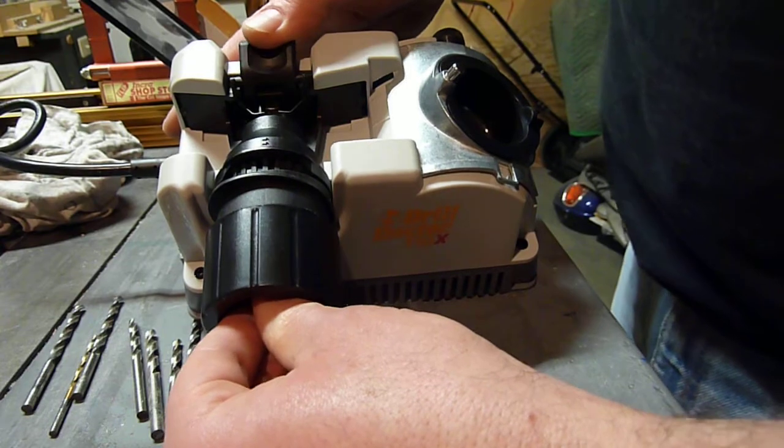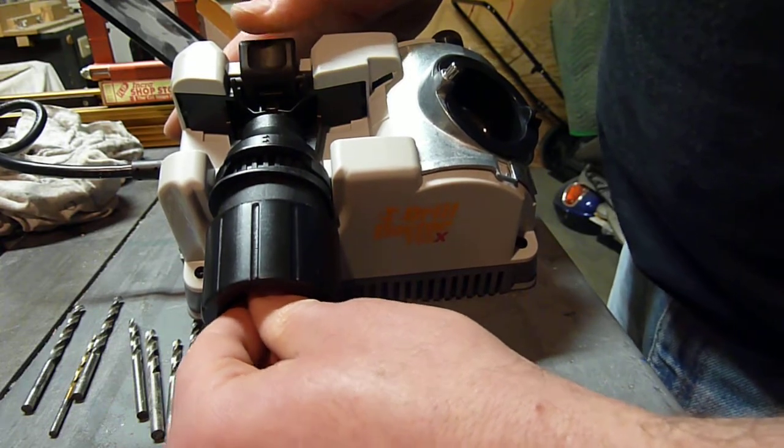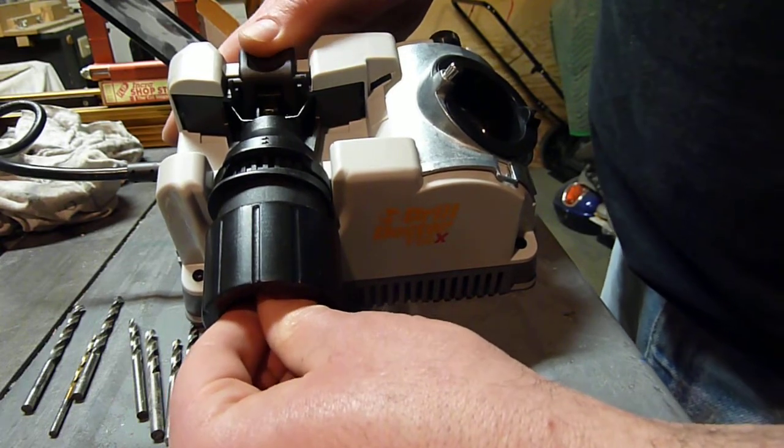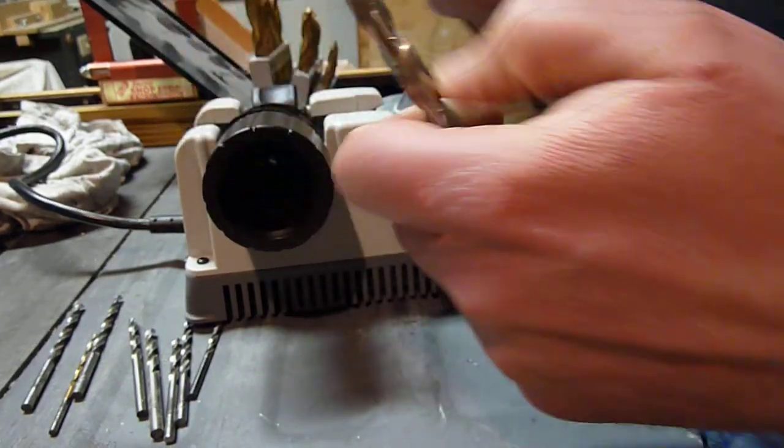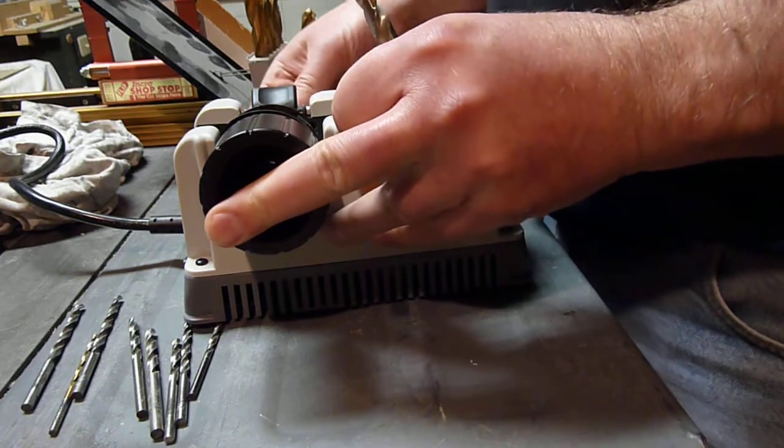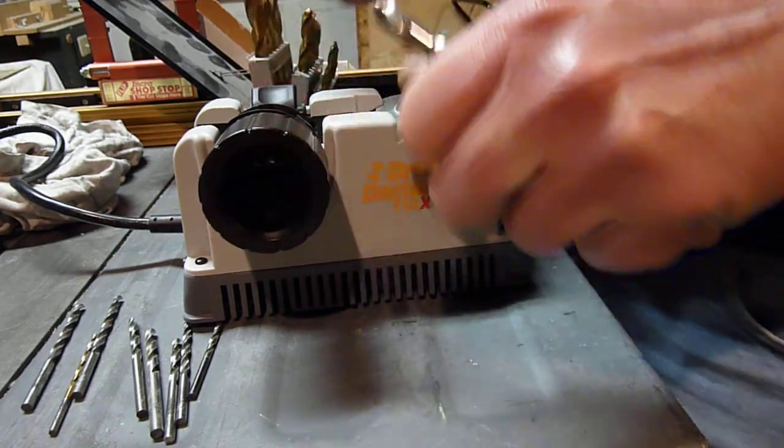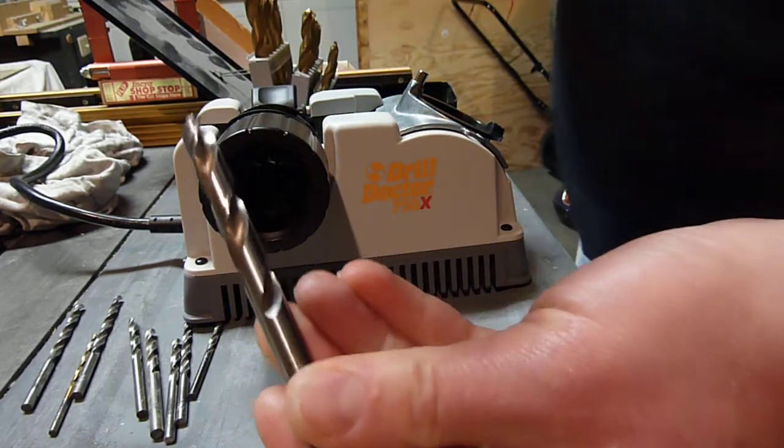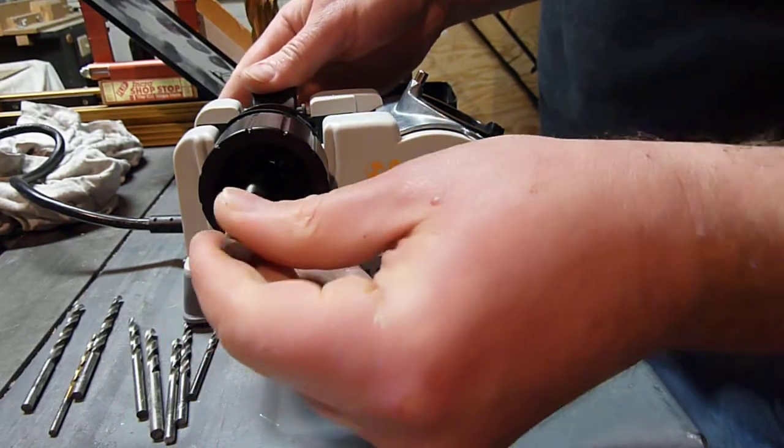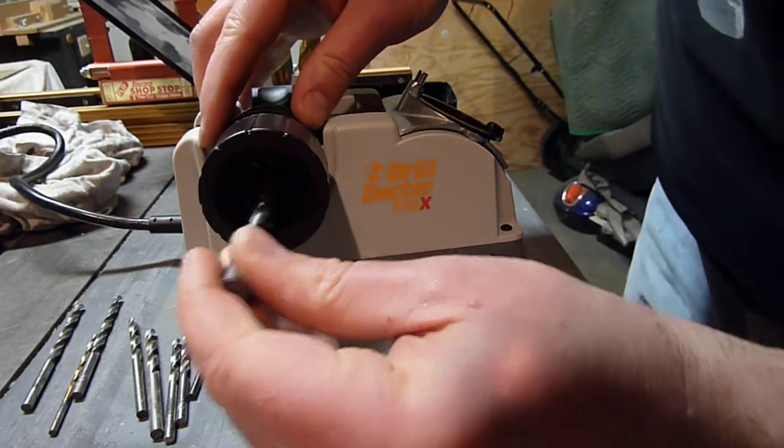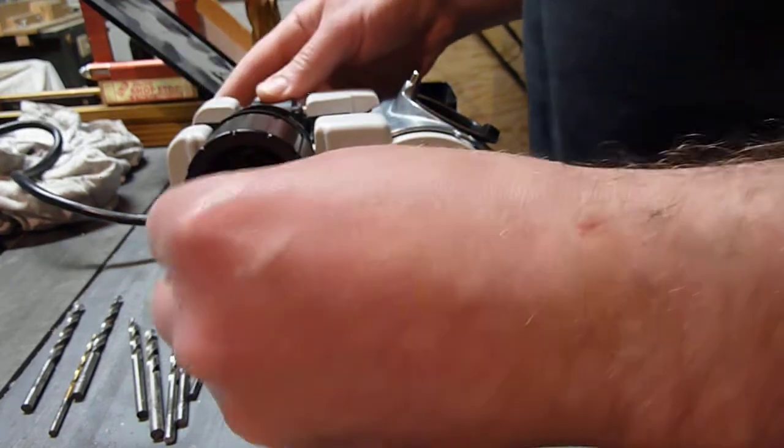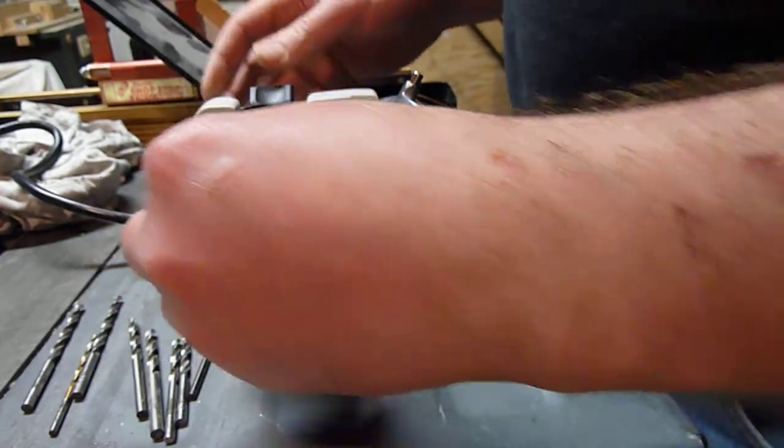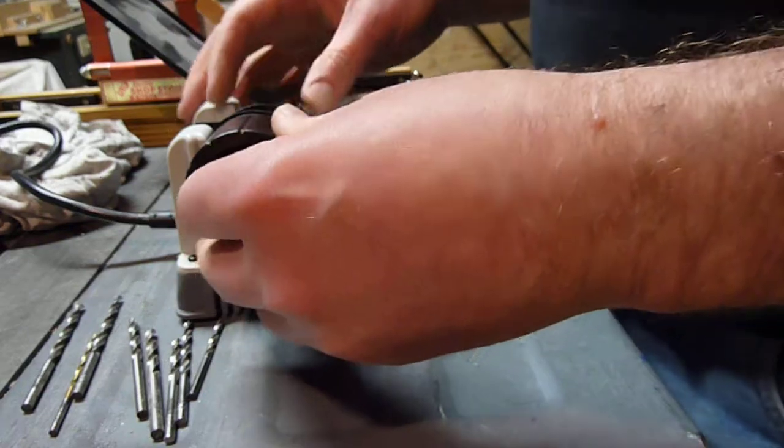The jaws are not quite catching on the flats of the flutes and it's because of this extra grind right there, so I think I'm going to set this material take-off knob all the way back out to zero so that I take a boatload of material off this bit. So I want to get past that grind on there, that back side of the flute grind.